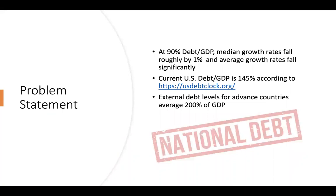The main takeaway from the paper is that at around the 90% debt-to-GDP threshold, median growth rates tend to fall by roughly 1%, and average growth rates fell significantly. The paper was written in 2010, right when the US hit that 90% debt-to-GDP threshold. Today, the US debt-to-GDP is about 145%.